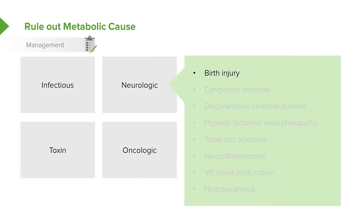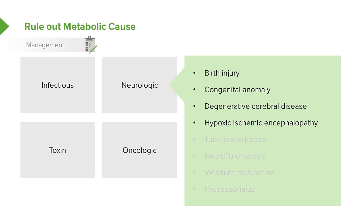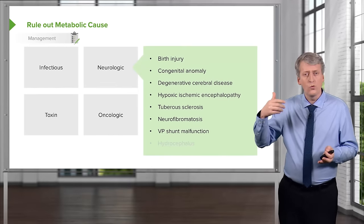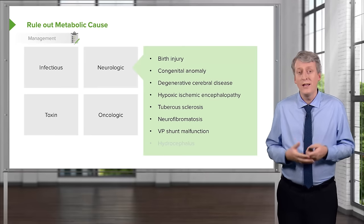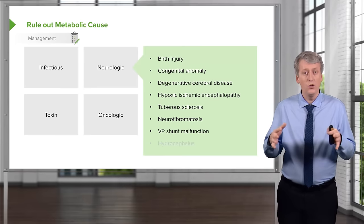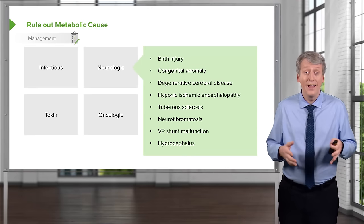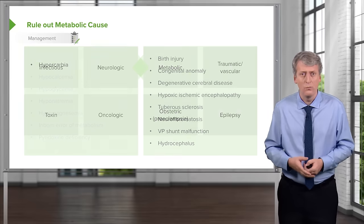Birth injuries can result in brain damage that causes seizures. Congenital anomalies such as polymicrogyria can cause seizures. Degenerative cerebellar disease, hypoxic-ischemic encephalopathy, tuberous sclerosis — these tubers can cause seizures. Neurofibromas can cause seizures. Patients who have shunts to drain excessive fluid may have malfunction of that drainage system, resulting in acute hydrocephalus, which can present with seizure.